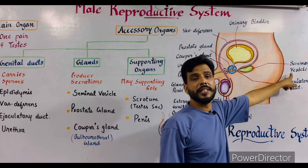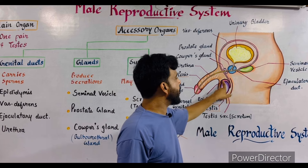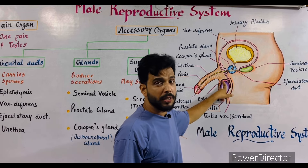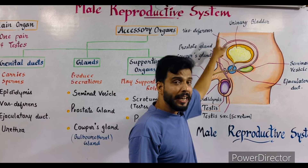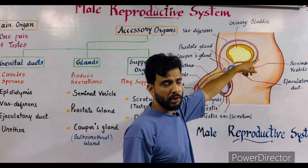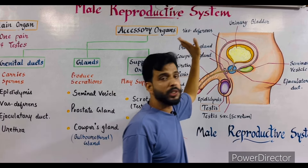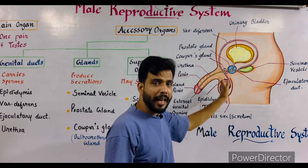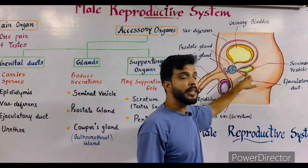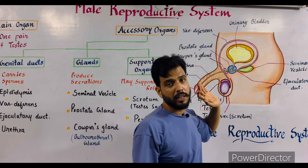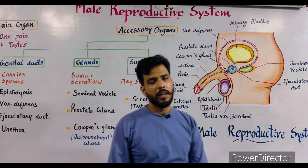The vas deferens arises from the epididymis and opens near or inside the seminal vesicle. The mature sperms stored inside the epididymis are carried into the abdominal cavity for reproduction with the help of this tubule — the vas deferens. So the vas deferens carries the sperms from the epididymis into the seminal vesicle and stores them there.